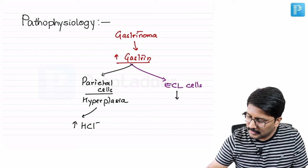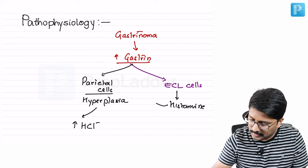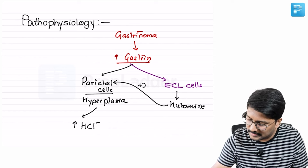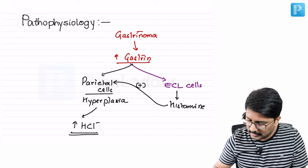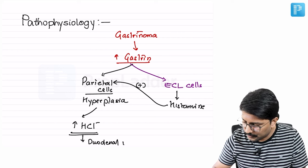This enterochromaffin-like cell will be producing histamine, which will again stimulate parietal cells to produce more acid. So this hydrochloric acid is responsible for these patients developing duodenal ulcers.